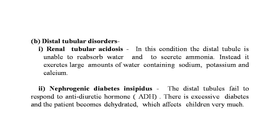Type B is distal tubular disorders. The first subtype is renal tubular acidosis, where the distal tubule is unable to reabsorb water and to secrete ammonia; instead it excretes large amounts of water containing sodium, potassium, and calcium. The second subtype is nephrogenic diabetes insipidus, where the distal tubules fail to respond to antidiuretic hormone (ADH), causing excessive diuresis and dehydration which affects children very much.